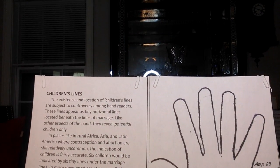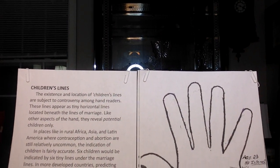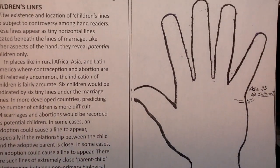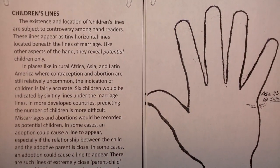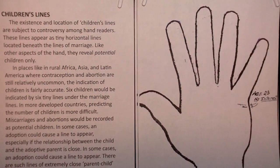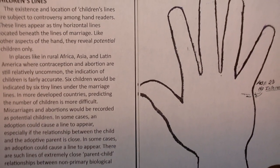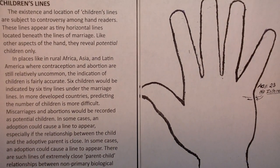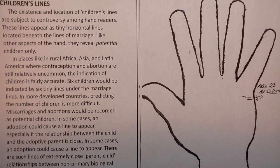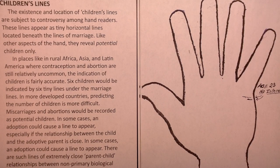We're going to go into children's lines momentarily, but first, let's see what we have here. I told you how lines will change quickly when it comes to dealing with changes in the relationship. Changes in the relationship naturally will change the lines. Here's an example.